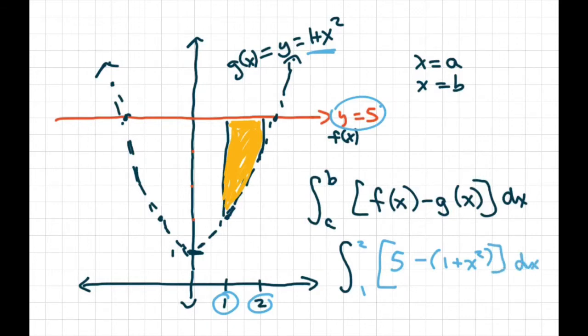So when you simplify this, you're going to get the integral from 1 to 2 of 4 minus x squared dx.